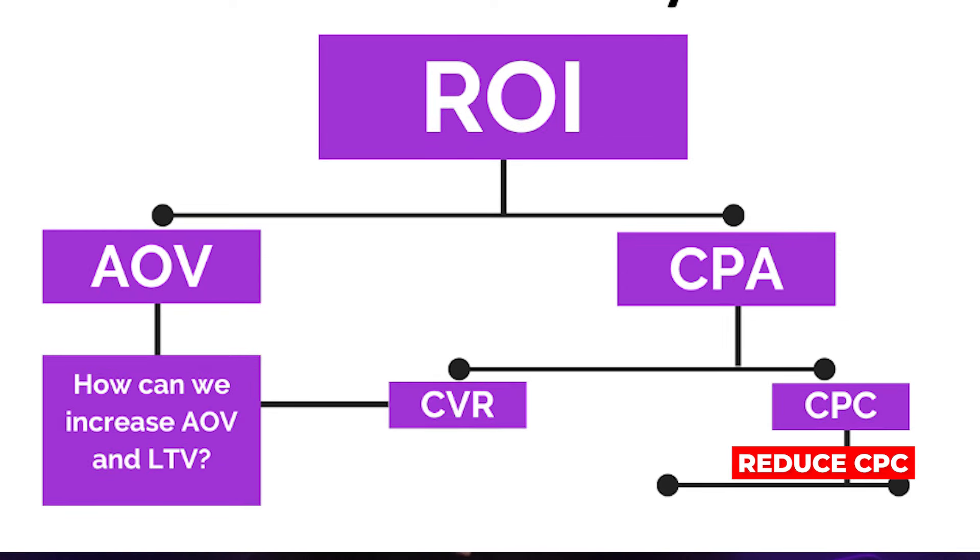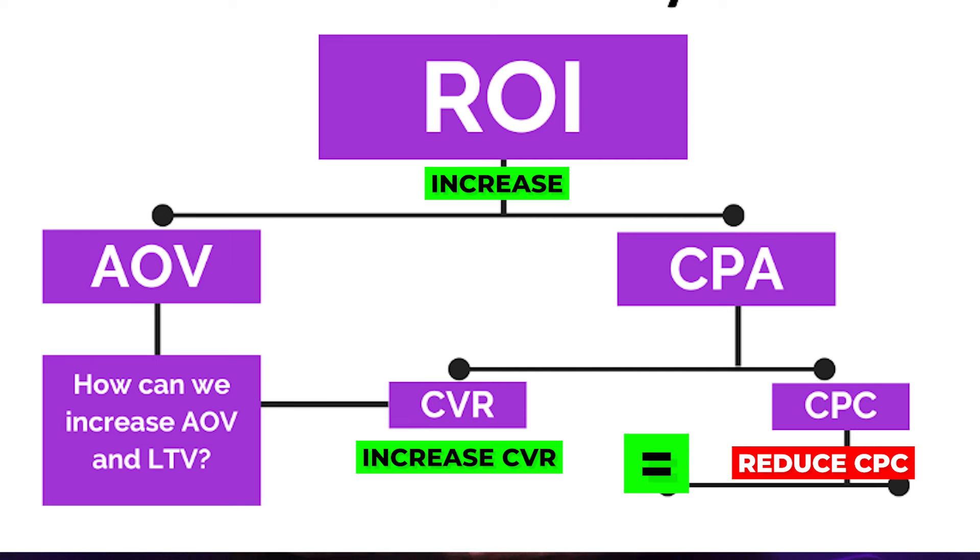We'll talk about how to increase your AOV and LTV later, but for now, how do you reduce your CPA? Your CPA comes down to two things: the cost of your traffic — if you're using Google or Facebook, your cost per click — and how much of that traffic actually purchases, or your conversion rate (CVR). If we can reduce our cost per click or increase our conversion rate, all else staying equal will increase our ROI and profitability. What you need to figure out first is what is the biggest bottleneck in this process — the one thing that, if changed, would have the biggest impact on your business growth.